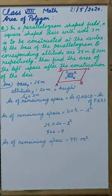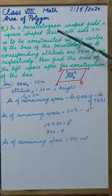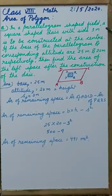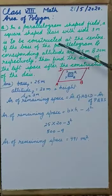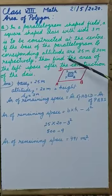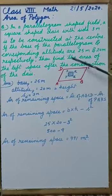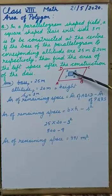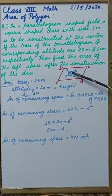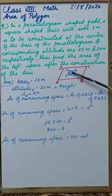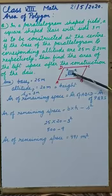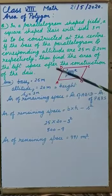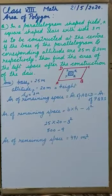In a parallelogram shaped field, a square shaped base with side 3 meter is to be constructed at the center. This is the field. Here in middle, in the center, I have to get a base constructed. Base means a platform raised to a certain height.